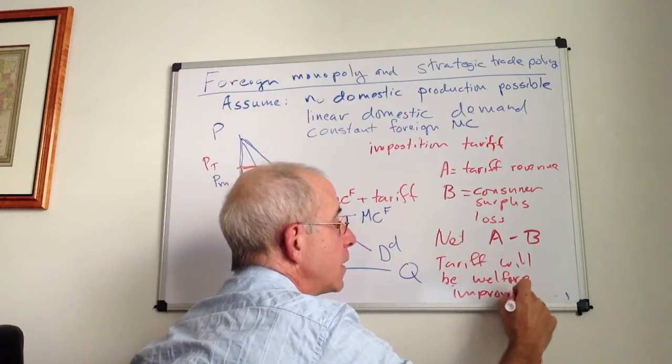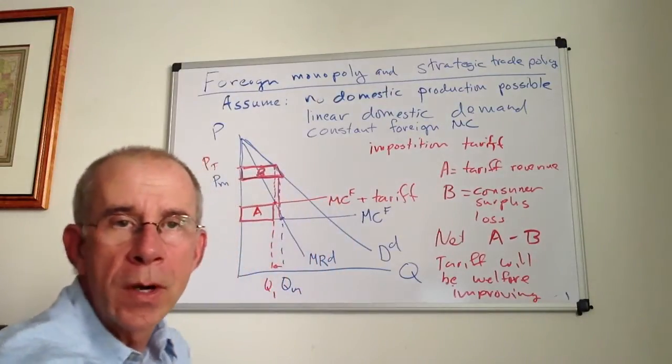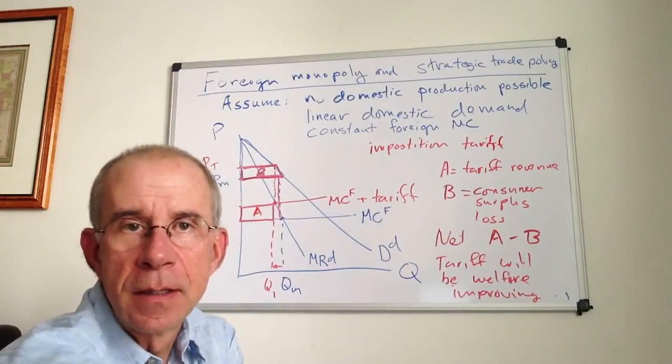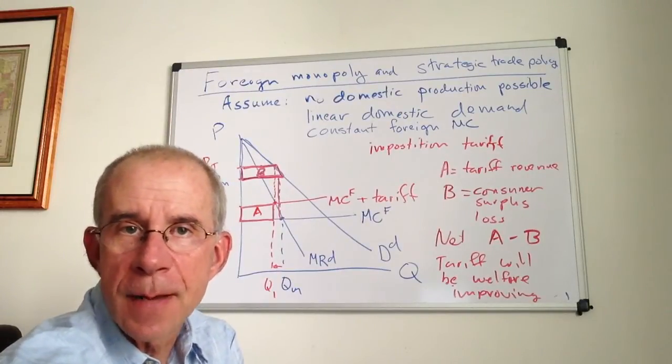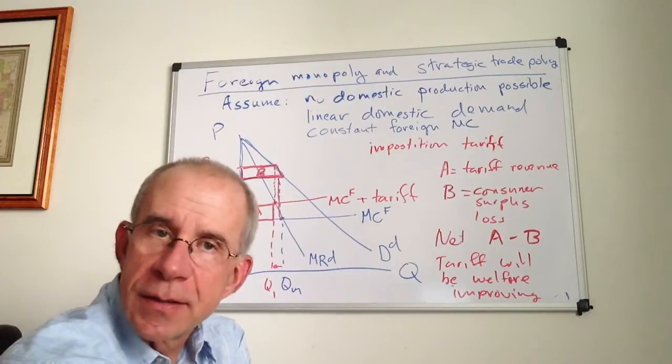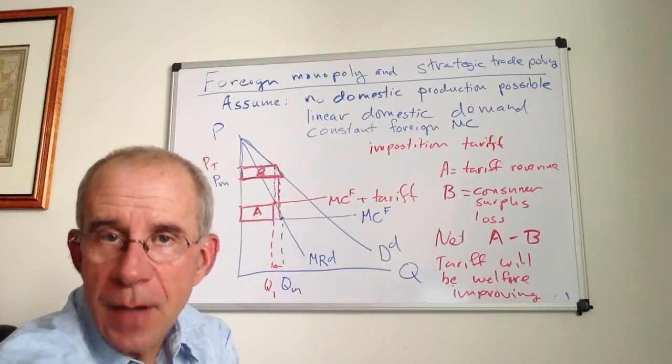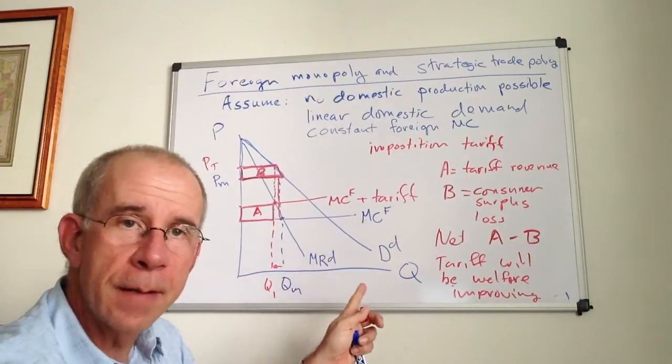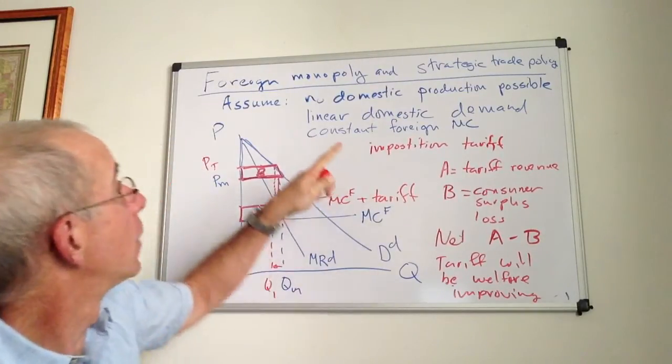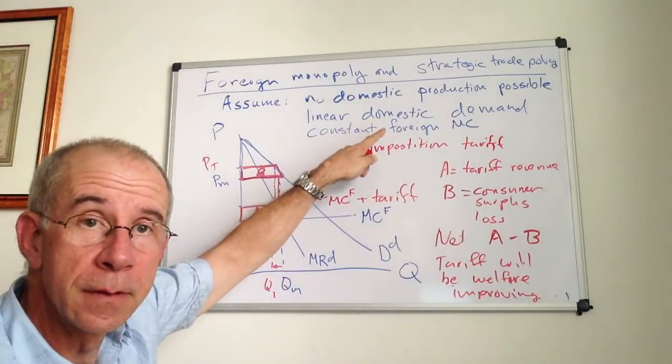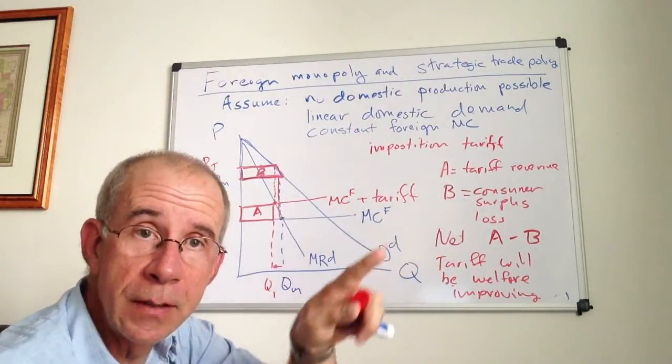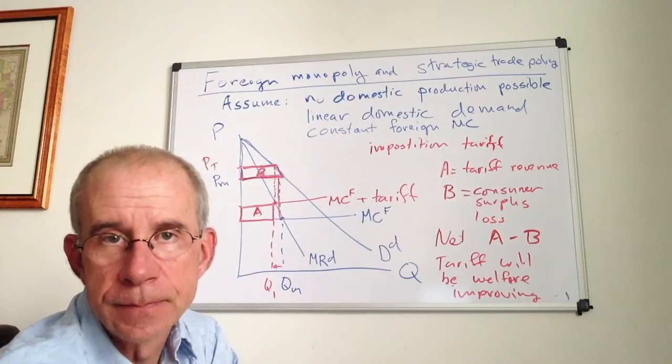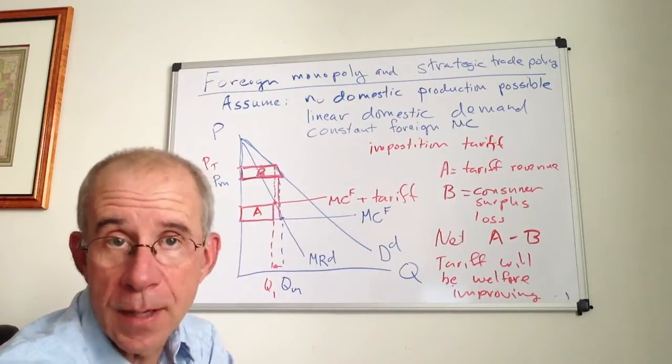So here's an instance where you alter the circumstances of the international competition, having a foreign monopolist, resulting in a tariff possibly improving the welfare, even of a small country, facing these foreign monopolists. So if you've got linear demand, a tariff will be welfare improving for the domestic economy with a foreign monopolist.